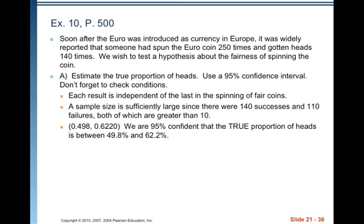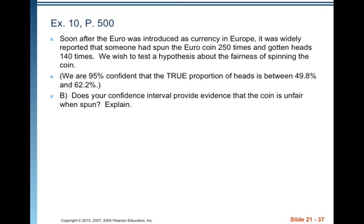We are 95% confident that the true proportion of heads is between 49.8% and 62.2%. Does the confidence interval provide evidence that the coin is unfair when spun? We need to think about what fairness means. If our alternative is that it's unfair, the null of fairness would mean that 50% of the time it lands heads up and 50% tails up. So our null hypothesis would be that P equals 0.5.